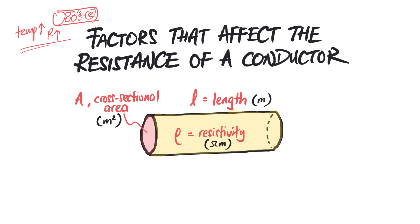So what are the other factors that will affect resistance? Namely, we have the cross-sectional area of the conductor — we assume it's a uniform cross-sectional area — the length of the conductor, and also the resistivity of the conductor.